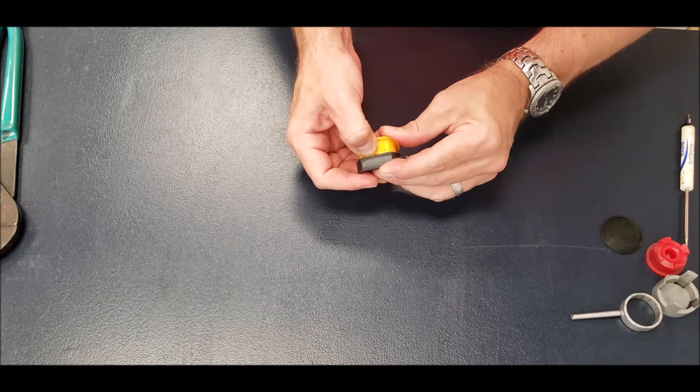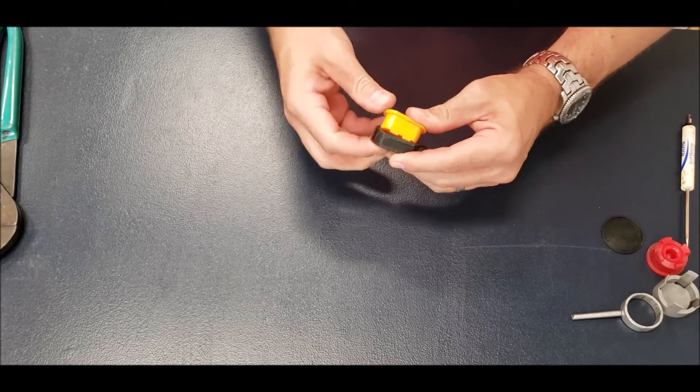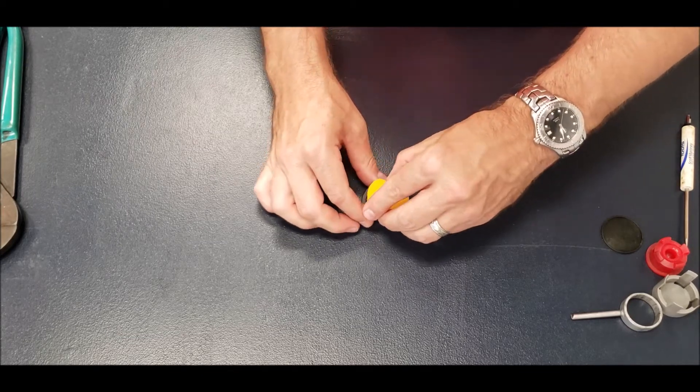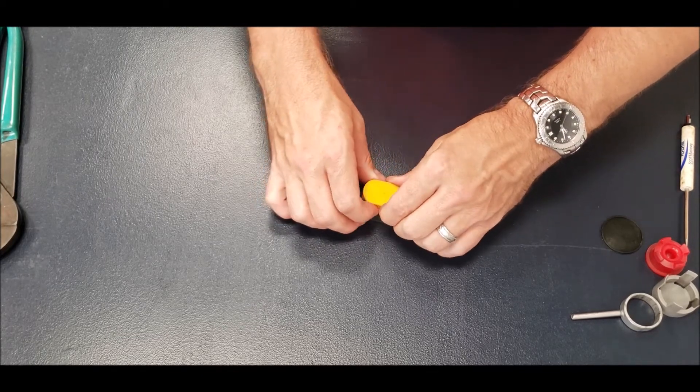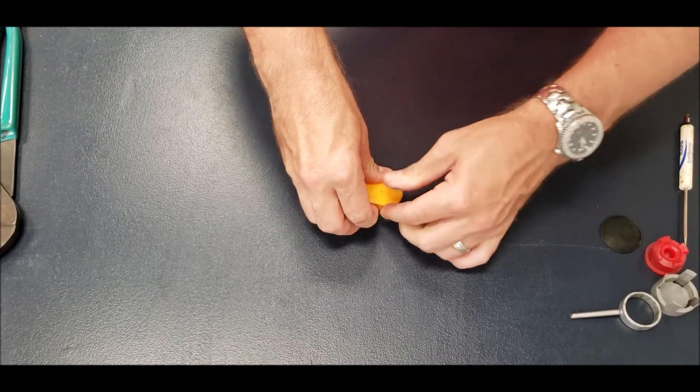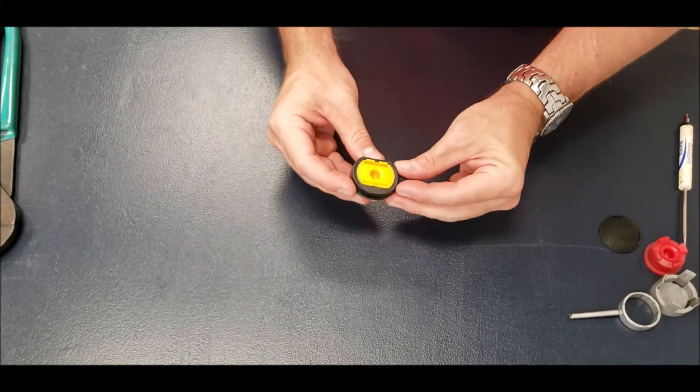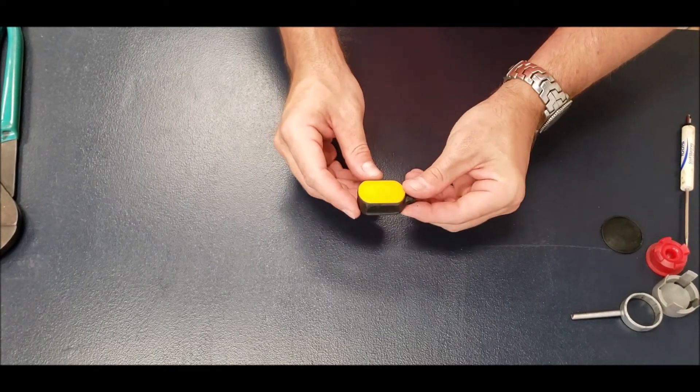You can use your finger to depress the tangs. It helps if you put it on a hard surface or something that will hold it still. Once you've got them slightly depressed and it starts to push in, you can push it in evenly, all the way through until those tangs engage on the other side.